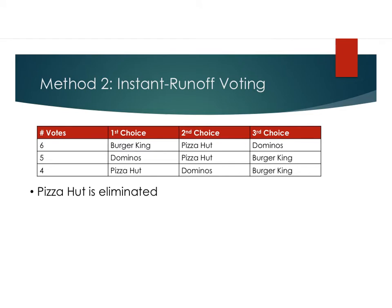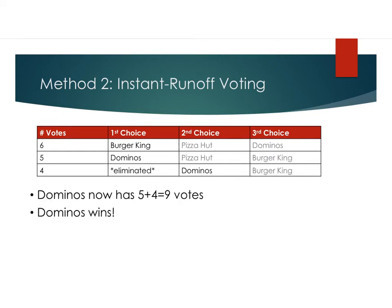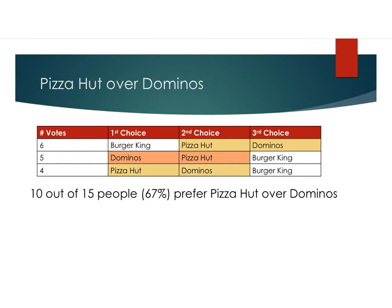Looking at our scenario, Pizza Hut only had four first-choice votes, so Pizza Hut was eliminated. But everyone that voted for Pizza Hut can have their second choice — in this case, Domino's — count. So now Domino's has a total of five plus four votes, giving Domino's nine votes. That means Domino's wins, because Burger King still just has six votes. But if we carefully examine the votes, more people prefer Pizza Hut over Domino's — six and four votes, a total of ten votes prefer Pizza Hut over Domino's, and only five votes prefer Domino's to Pizza Hut.